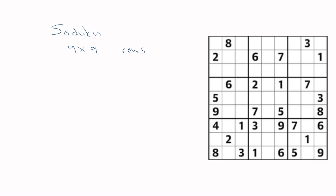The next problem is Sudoku. It's a nine-by-nine grid where you must fill all rows with values one to nine, all columns with one to nine, and each of the nine sub-blocks or cages must also contain one to nine with no duplicates. There are typically one or two clean ways to represent this.